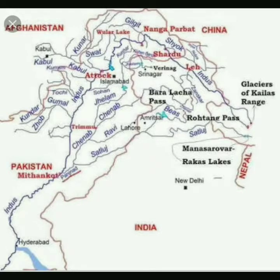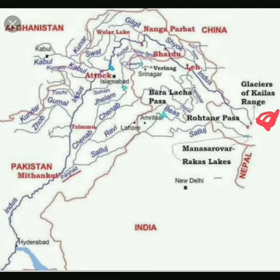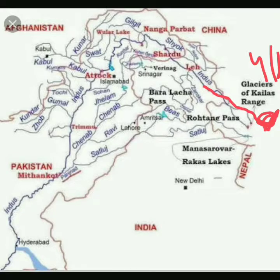We'll be assisting this explanation of the Indus river system with the help of a map. As you can see, the first line flows in the northwest direction between Ladakh and Zaskar. It originates in Bokhar Chu, which is in the Kalash mountain range, at an altitude of 4164 meters. Referring to the map, you can see it starting from here and moving in this direction.